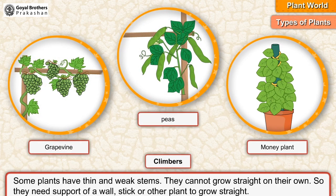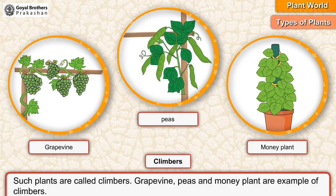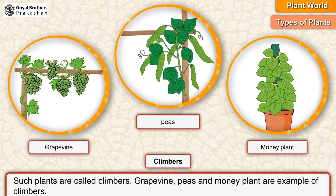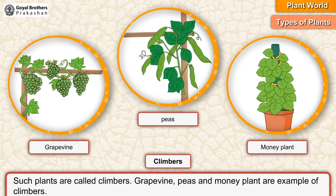Climbers: some plants have thin and weak stems. They cannot grow straight on their own. So, they need support of a wall, stick or other plants to grow straight. Such plants are called climbers. Grapevine, peas and money plant are examples of climbers.